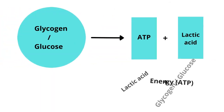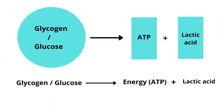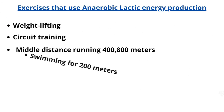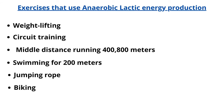Energy is produced by glycogen in the muscles and liver, and glucose in the blood. Lactic acid is produced as a by-product of energy generation. It is best to do simple exercises such as walking and cycling to remove this deposited lactic acid.